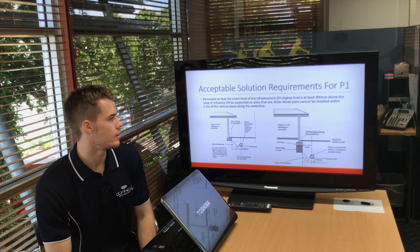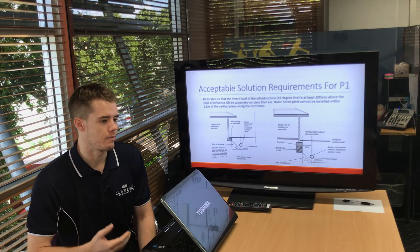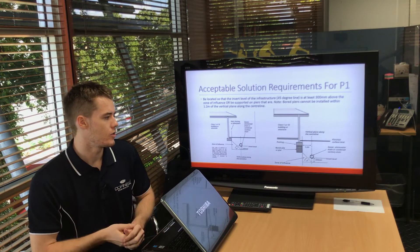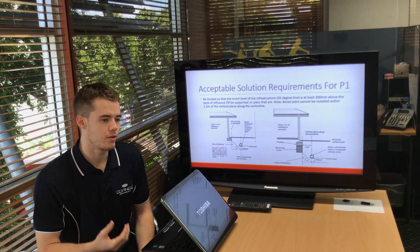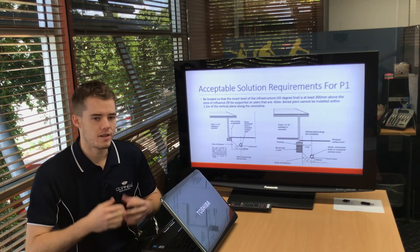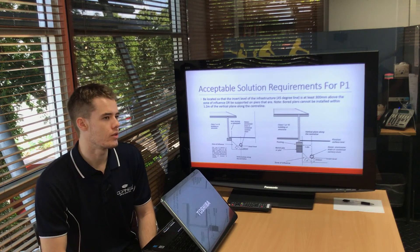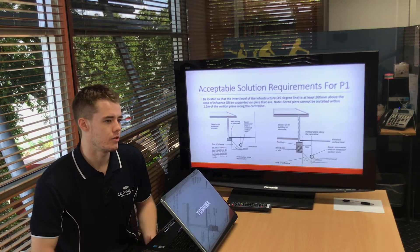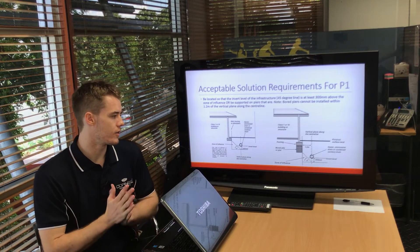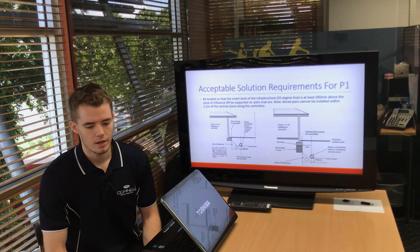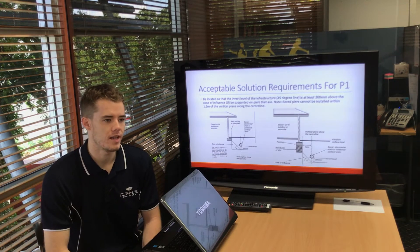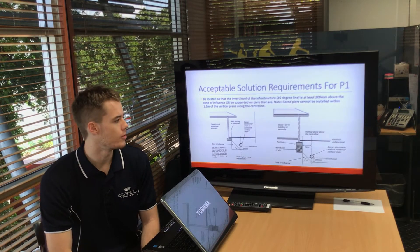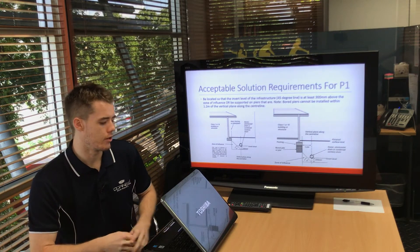There are cases where your footings — say an edge beam for a raft slab — can't always be deep enough to avoid affecting the sewer. The way around that is by adding piles underneath those building footings so they're founded deep enough to not have any influence over where those services are. The only limitation is that bored piers, if you choose to use them, have to be 1.2 meters clear of the centerline of the service — because when you send in the rig and it digs down, you don't know if you've hit the service before you've chewed through the whole pipe.